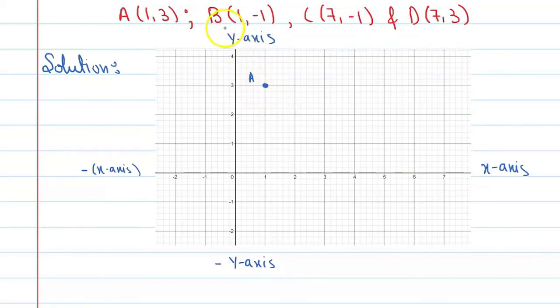Now the next point is B, that is x=1, y=-1. So x=1 and y=-1, so this point will be here. The next point is C, that is x=7, y=-1. And the next point is D, that is x=7, y=3. So it will be here.